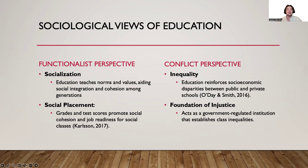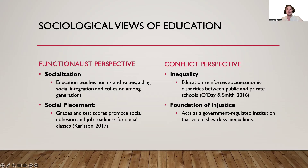A sociologist from the conflict theory perspective would view education as a social institution that reinforces socioeconomic inequality due to a lack of equality and resources among public and private schools. This perspective could also raise the case that the educational system is the first governmentally regulated social institution a member of society joins, and therefore is the foundation of inequality and injustice among socioeconomic classes.